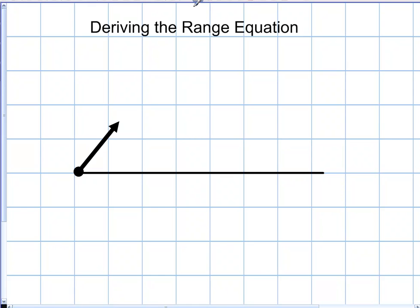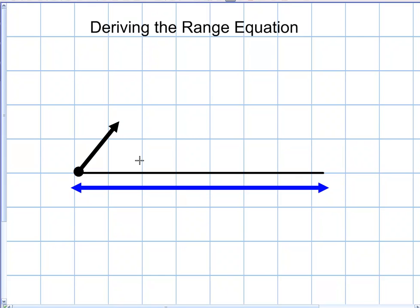That situation is deriving what's called the range equation. Let's say that you wanted to find the range of a projectile, but you only knew the velocity and the angle. So you don't have your traditional variables to work with — you don't have three in any dimension — but you have velocity and angle. If I gave you the initial velocity and some angle of launch, and I wanted you to find the range, or delta x, how would you go about doing that?